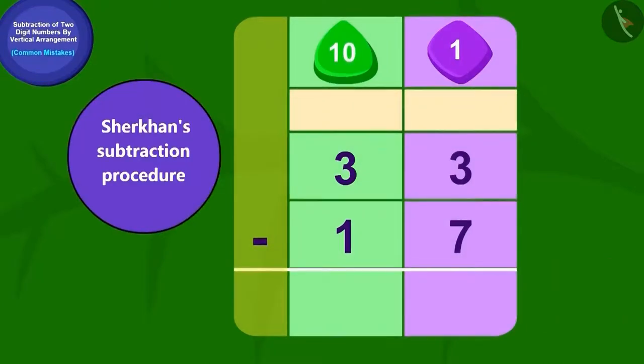Now let us look at Sher Khan's answer. Can we subtract seven ones of 17 from three ones of 33? No. So what do we do now?